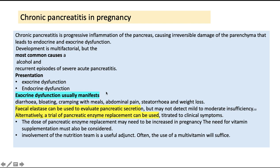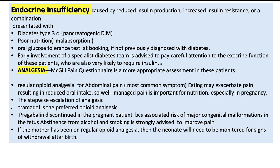Exocrine dysfunction usually manifests with diarrhoea, bloating, cramping with meals, abdominal pain, steatorrhoea, and weight loss. Faecal elastase can be used to evaluate pancreatic secretion but may not detect mild to moderate insufficiency. Alternatively, a trial of pancreatic enzyme replacement can be used, titrated to clinical symptoms; the dose may need to be increased in frequency. The need for vitamin supplementation must also be considered, and involvement of a nutrition team is a useful adjunct.